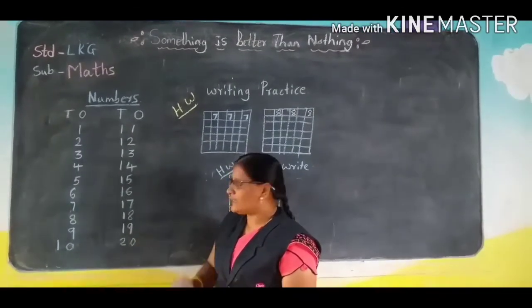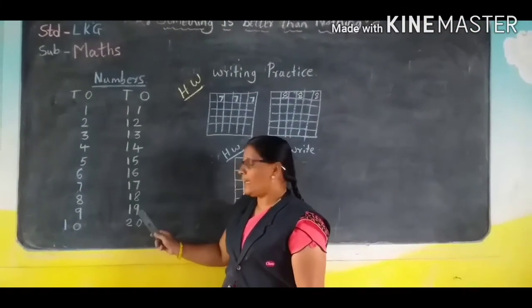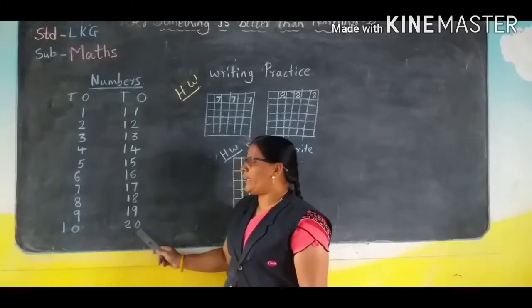One, seven, seventeen. One, eight, eighteen. One, nine, nineteen. Two, zero, twenty.